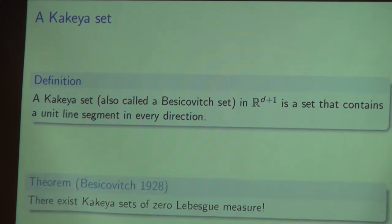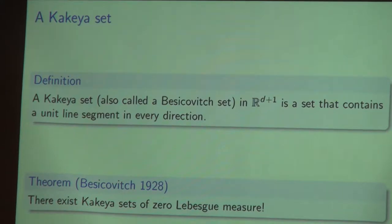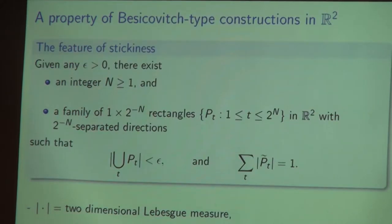The whole investigation started from a classical result of Besicovitch back in 1928, where he established that there exist Kakeya sets of zero Lebesgue measure. Besicovitch's original construction relied on a procedure involving transfer of triangles, and that procedure has been refined in many different directions. One of the most streamlined versions available to date, I'm going to refer to as the feature of stickiness.